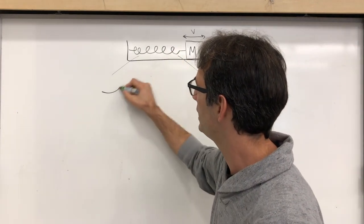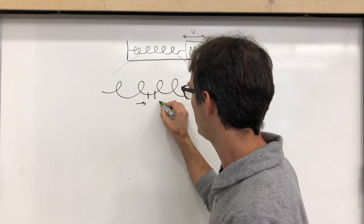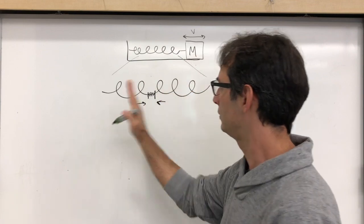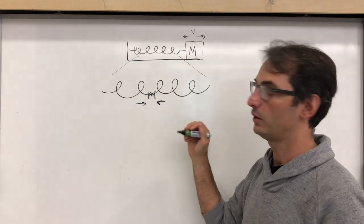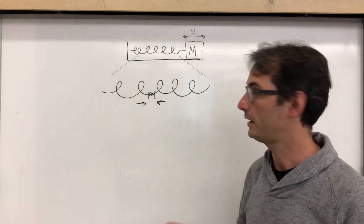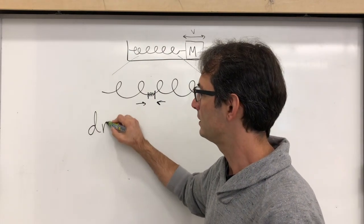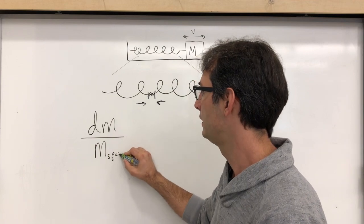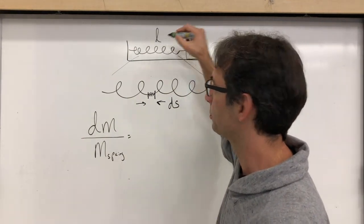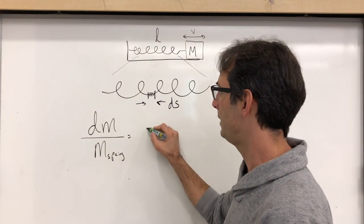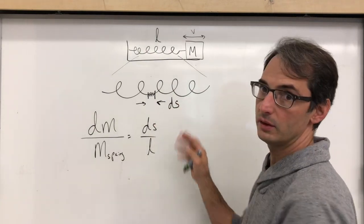We'll identify an element of the spring — a small mass element that is wiggling back and forth. The kinetic energy it contributes depends on both its mass and speed. The element's mass dm is to the mass of the whole spring as the size ds is to the length of the whole spring l, so dm over m_spring equals ds over l. This tells us how much mass is in the oscillating element.